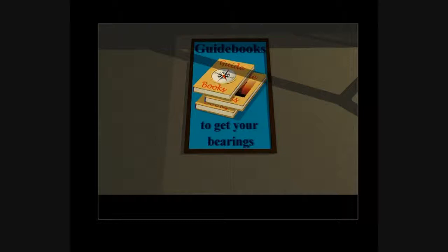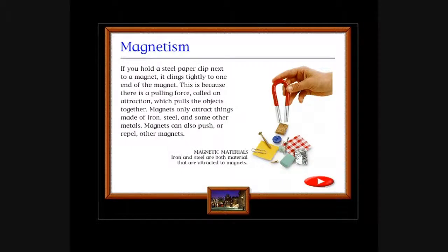Guidebooks to get your bearings. Look, there's a picture of a compass for people who don't have a real compass. You can look at the front of your guidebook and it will tell you where to go. Magnetism: If you hold a steel paper clip next to a magnet, it clings tightly to one end of the magnet. This is because there is a pulling force called an attraction which pulls the objects together. Magnets only attract things made of iron, steel, and some other metals. Magnets can also push or repel other magnets. Magnetic materials: Iron and steel are both materials that are attracted to magnets.